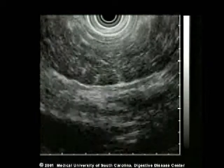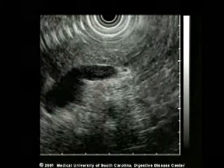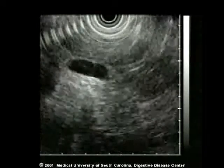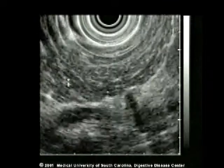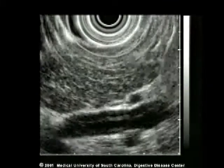Each video will demonstrate the body and tail of the pancreas and which features were agreed upon. Note the typical club head view with the splenic vein coming across the bottom of the screen. In each example, the pancreatic body is followed out to the tail by rotating the scope in a clockwise direction.